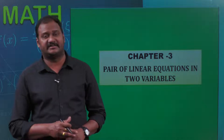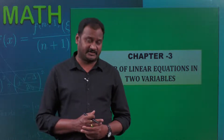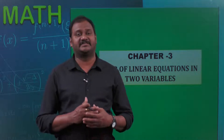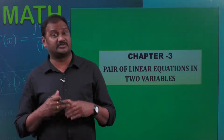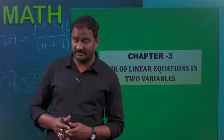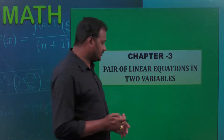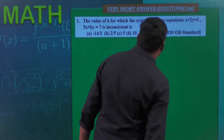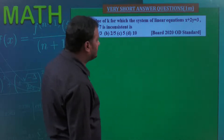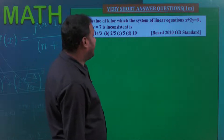Before that, we already discussed about linear equations — consistent and inconsistent — in which cases we can find out the solution and in which cases we cannot. Coming to the first problem: find the value of k for which the system of equations x plus 2y equals 3 and 5x plus ky equals 7 is inconsistent.